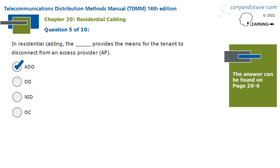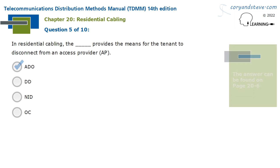In Residential Cabling, the ADO provides the means for the tenant to disconnect from an access provider, or AP.